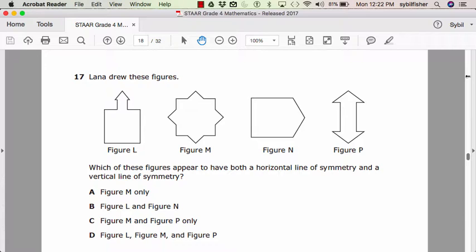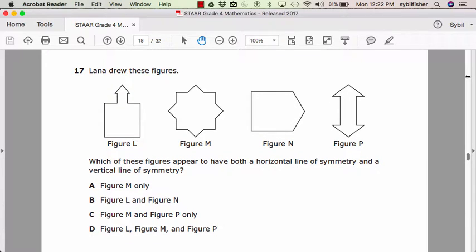Number seventeen. Lana drew these figures. Figure L, figure M, figure N, figure P. Which of these figures appear to have both a horizontal line of symmetry and a vertical line of symmetry?